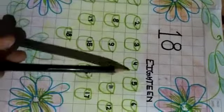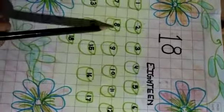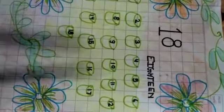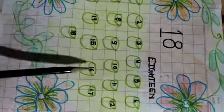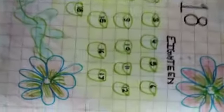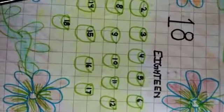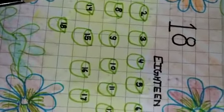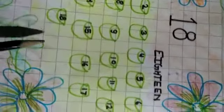1, 2, 3, 4, 5, 6, 7, 8, 9, 10, 11, 12, 13, 14, 15, 16, 17, and 18. Okay, student. Now, we will count it. Now, we will learn and write.